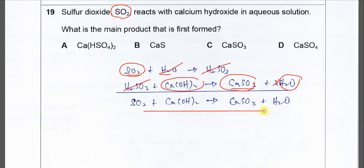But the question is asking for the main product, so the main product is calcium sulfite, answer C.